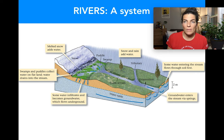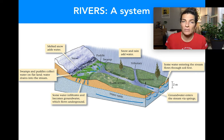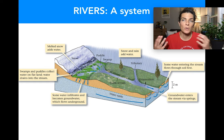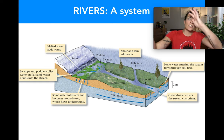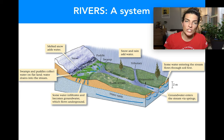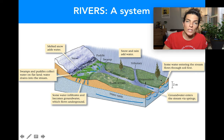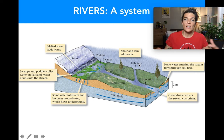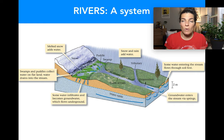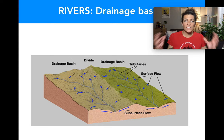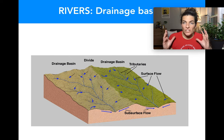Rivers are a system. They usually begin with melting snow and ice in the mountains, forming swamps and small streams that find their way downhill, collecting in ponds and lakes. Some water infiltrates to become groundwater, flowing underground near the river. Streams are joined by other streams and tributaries, eventually forming a river. The whole interconnected system is called a drainage basin.